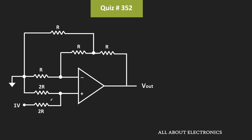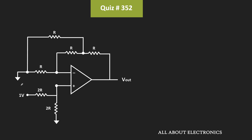If you look at this circuit, then at the non-inverting terminal, this resistor 2R is connected to the ground terminal. So equivalently, we can draw this circuit like this.